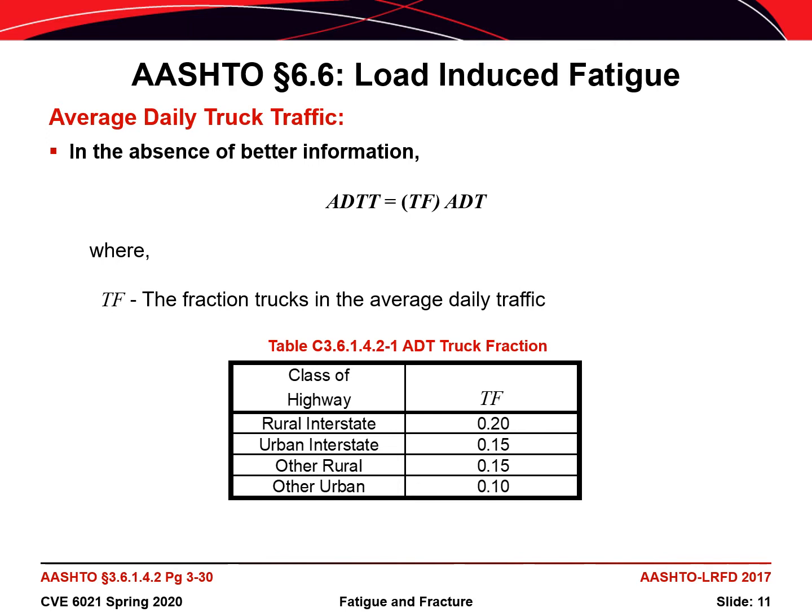For some bridges, average daily truck traffic data may not be available, and you may have to use average daily traffic data instead. In those cases, the average daily truck traffic can be estimated by multiplying the truck fraction from the table by the average daily traffic for the bridge. On a rural interstate, it's assumed that 20% of the traffic is truck traffic, and on an urban secondary road, it's assumed that 10% of the traffic is truck traffic.